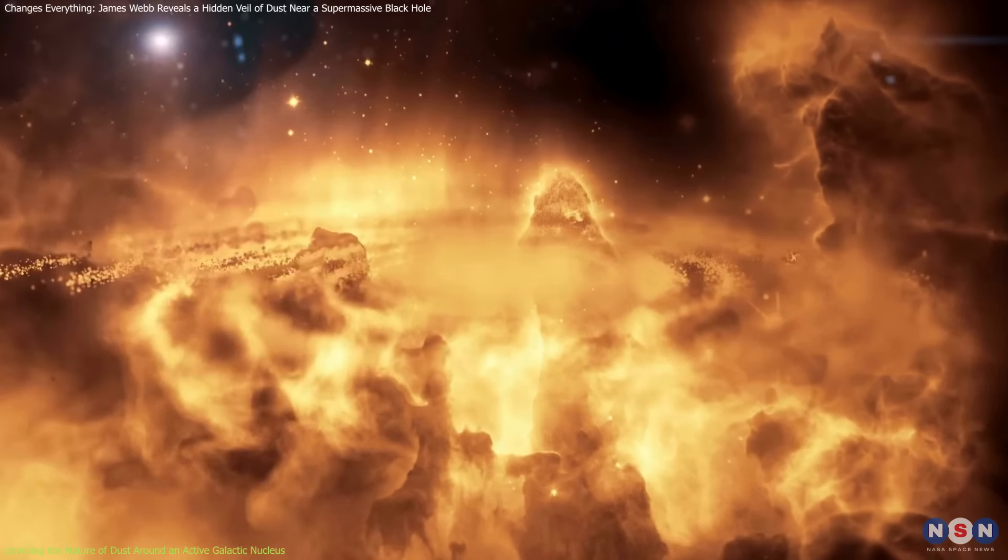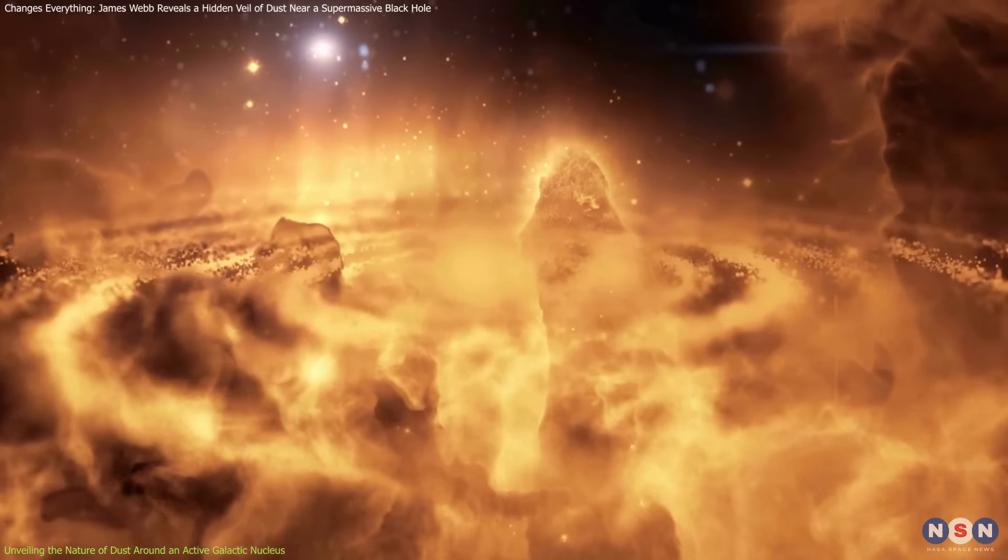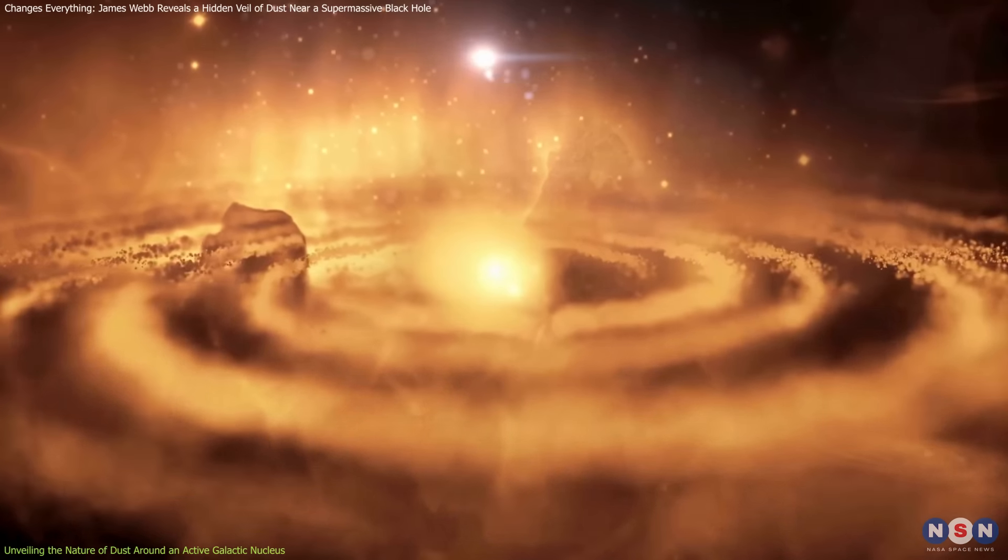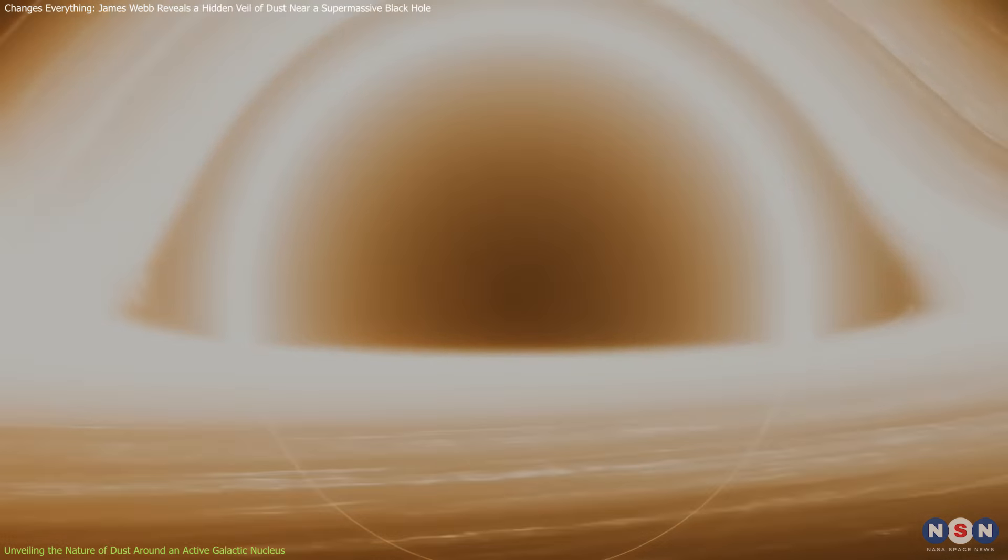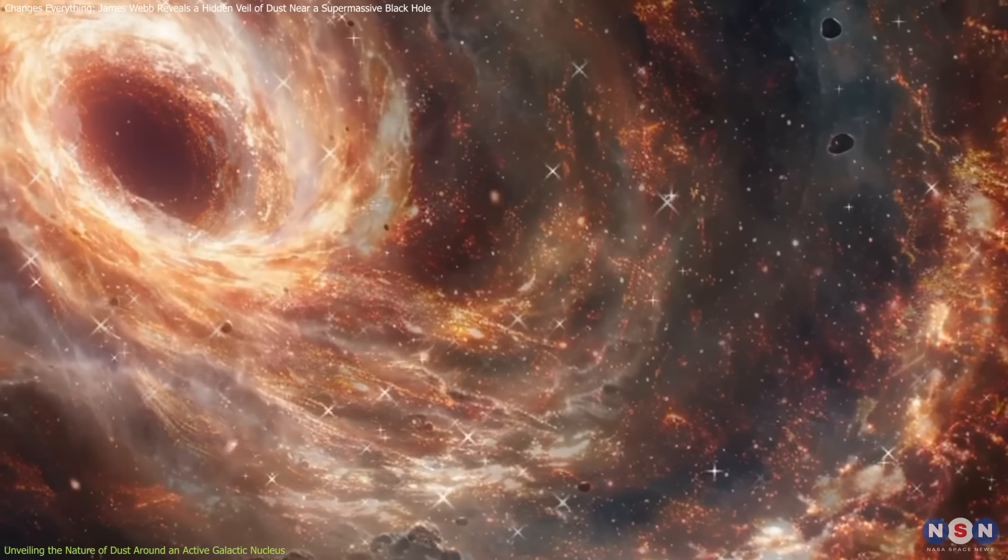Surprisingly, astronomers found that much of this dust exists outside the typical ring of material directly feeding the black hole, known as the accretion disk. This outer dust, called polar dust, is heated not by radiation from the black hole, as might be expected,